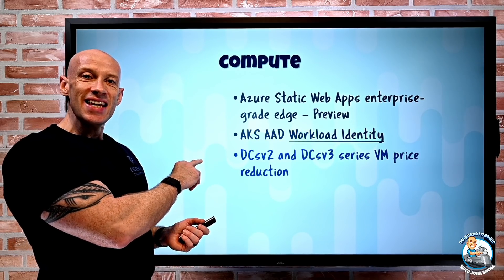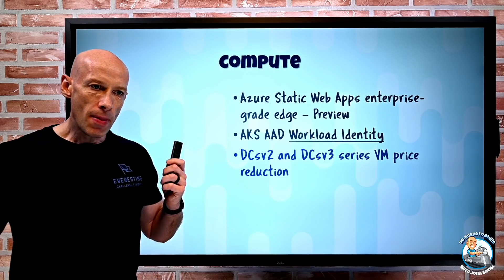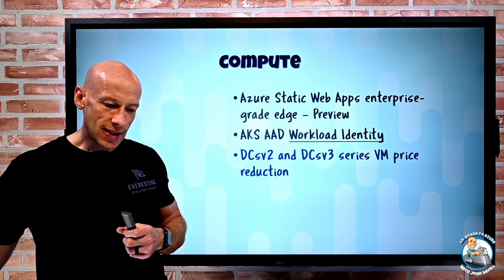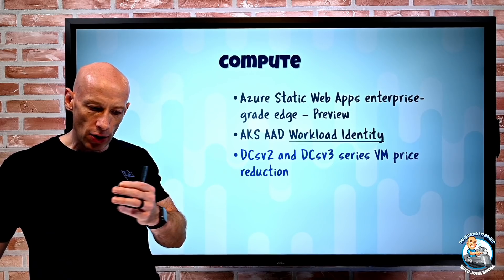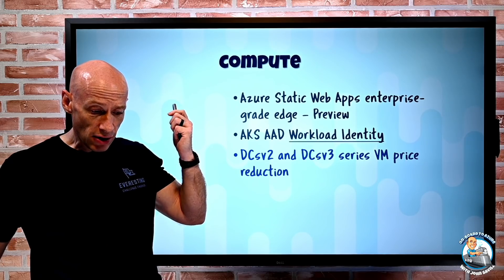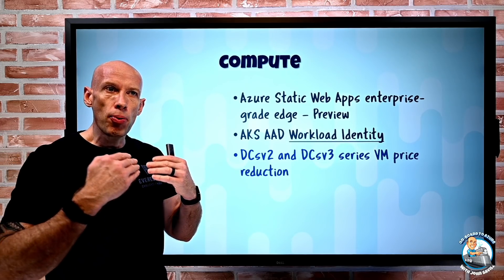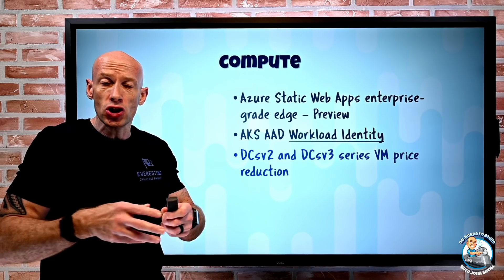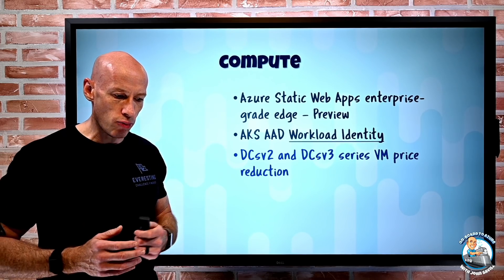The DCSV2 and V3 series VMs have had a price reduction. These VMs are confidential compute — those secure enclaves that give us an area of protected memory that applications can take advantage of for highly sensitive operations. It's up to a 33% price reduction that took effect from the 1st of January 2022. Basically there is no longer a premium add-on for these secure compute VMs over general purpose on a per virtual CPU level.